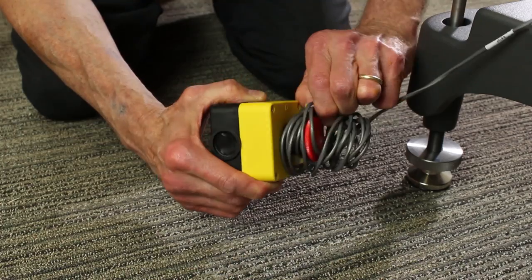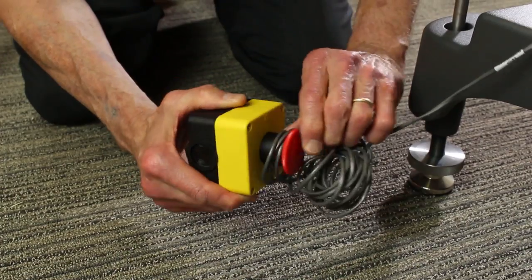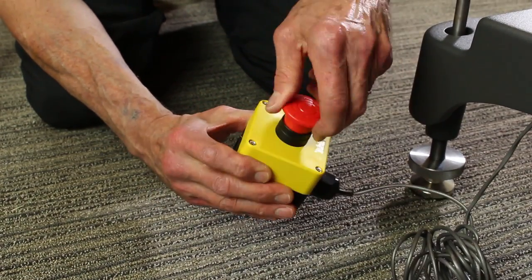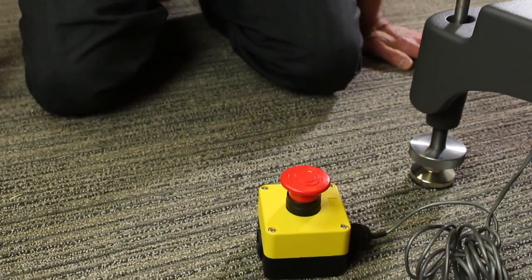Now it's time to power on Sawyer. First, make sure the e-stop button is in the out or released position by twisting the button in the direction of the arrow.